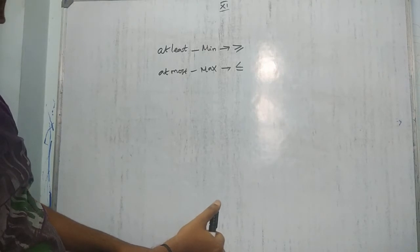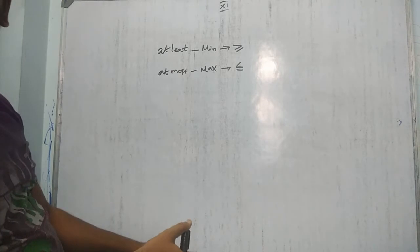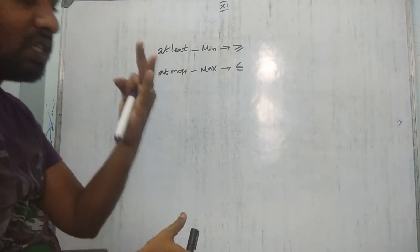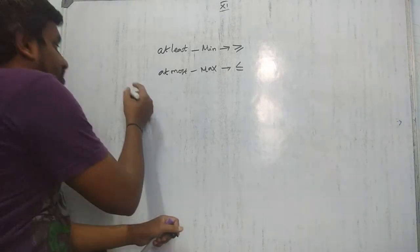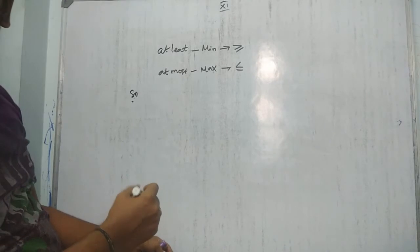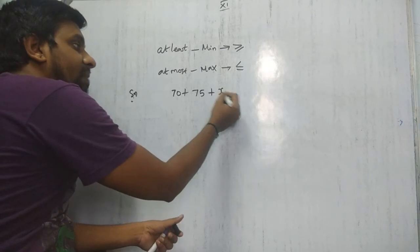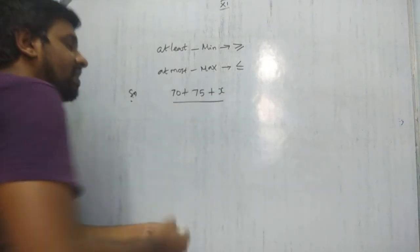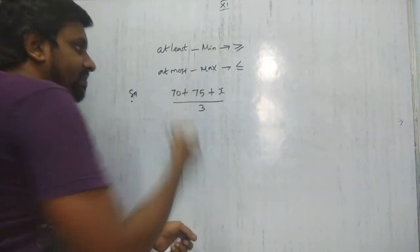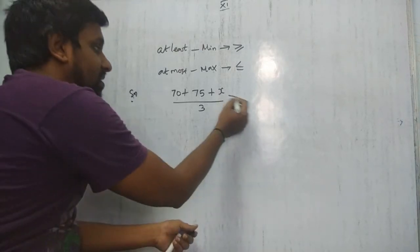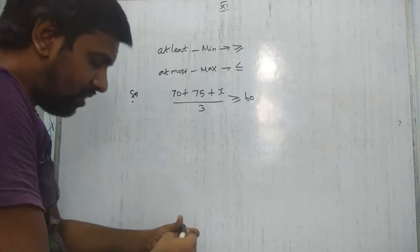Word problem: Ravi obtains 70 and 75 marks in the first two unit tests. Find the minimum marks he should get in the third test so that the average is at least 60. Let the third test marks be x. Average = (70 + 75 + x)/3 ≥ 60, that is (145 + x)/3 ≥ 60.